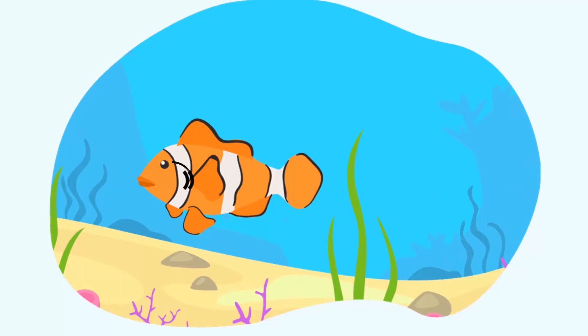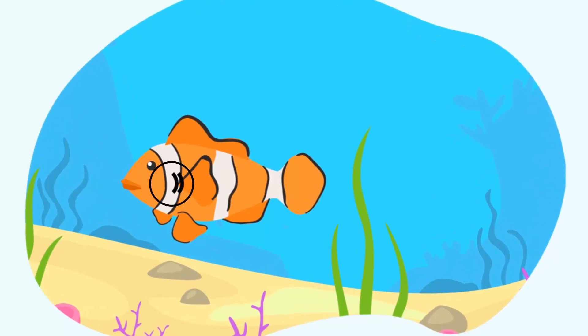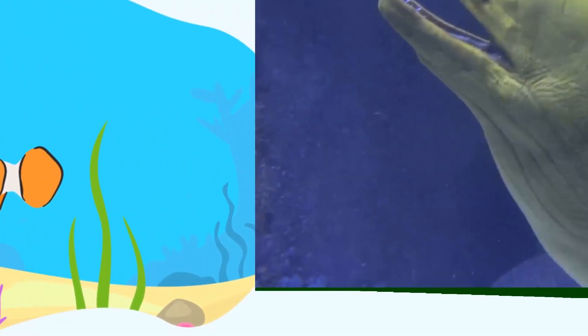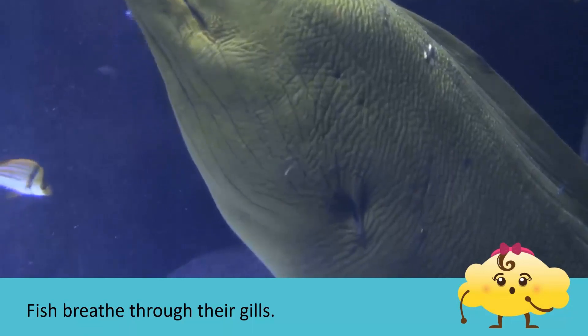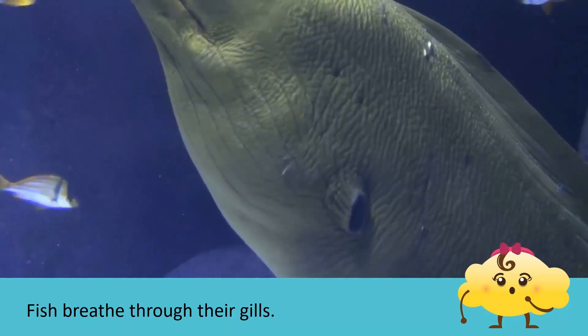But animals that live in water, for example fish, use special organs called gills to breathe. These animals take in water and use the gills to filter out the oxygen that is dissolved in the water.